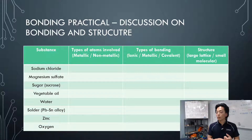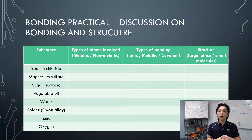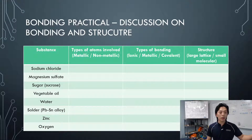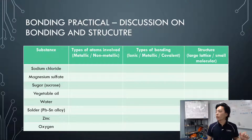So oil and water should be pretty much the same: non-metals only, covalent bonds between hydrogen and oxygen, and again small molecular structure for water.